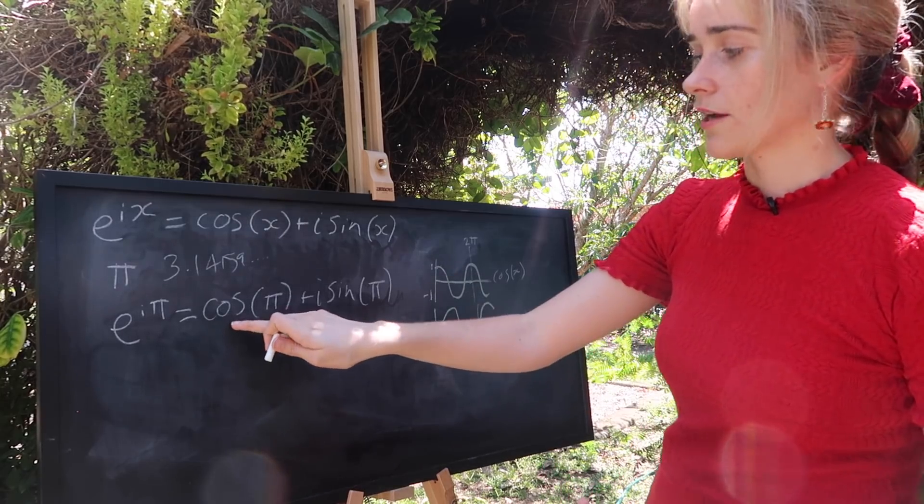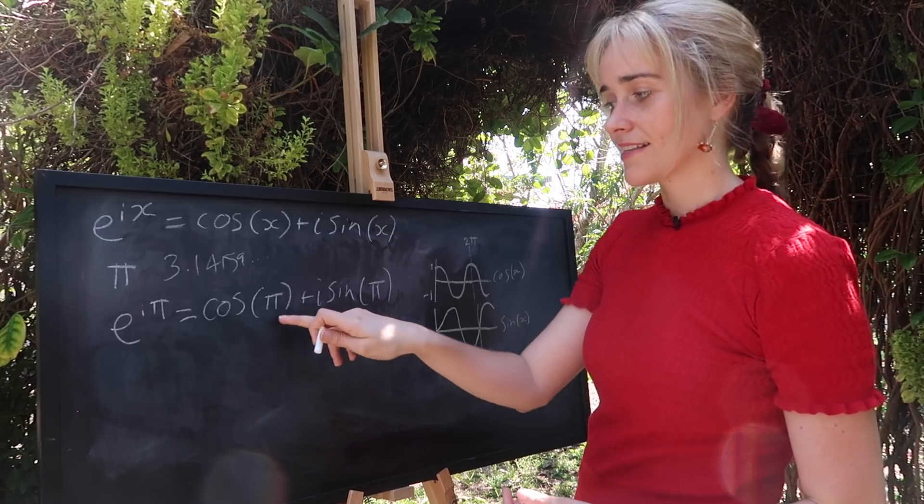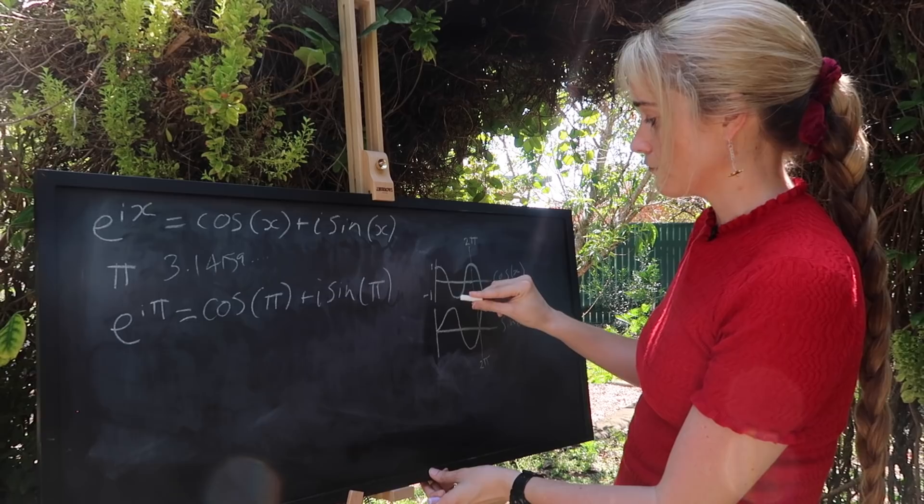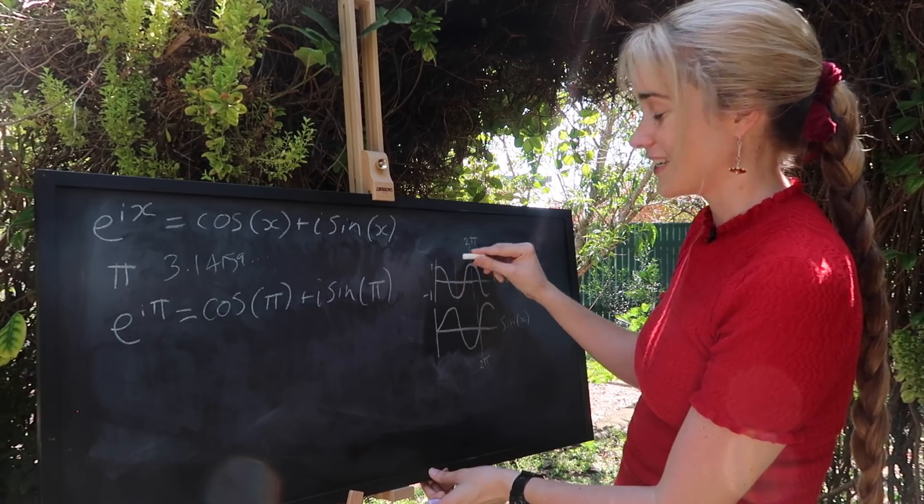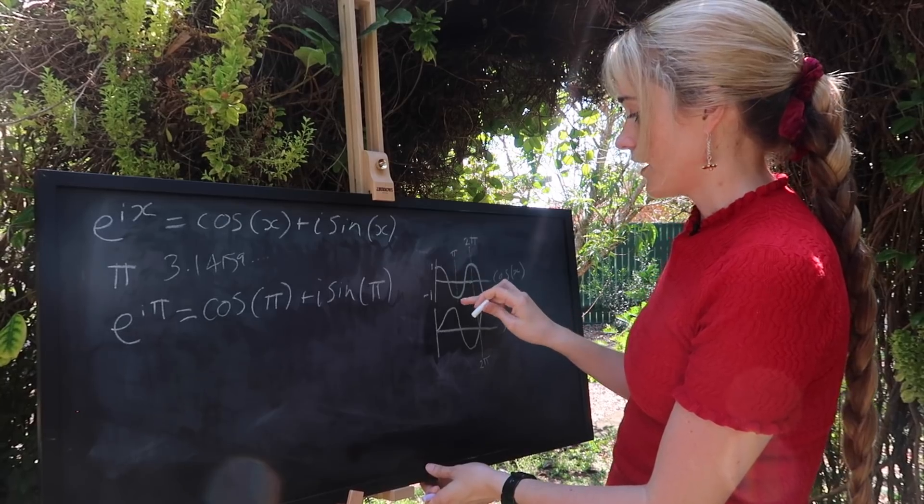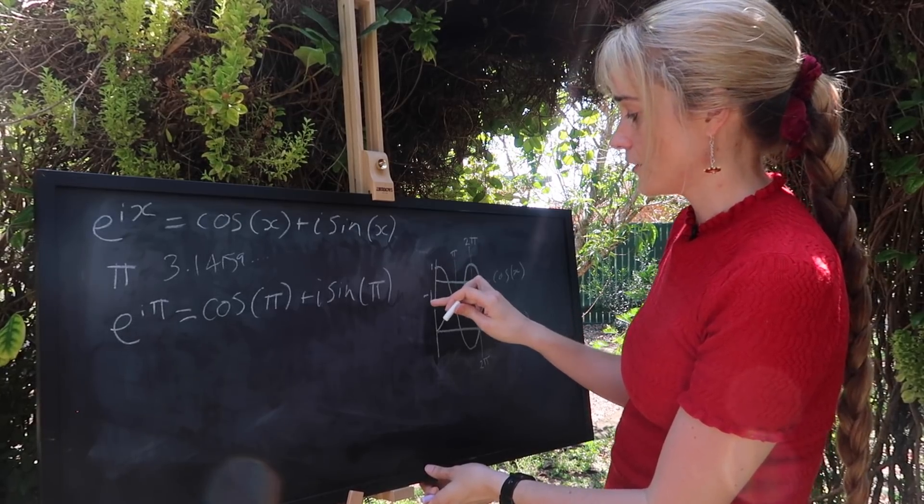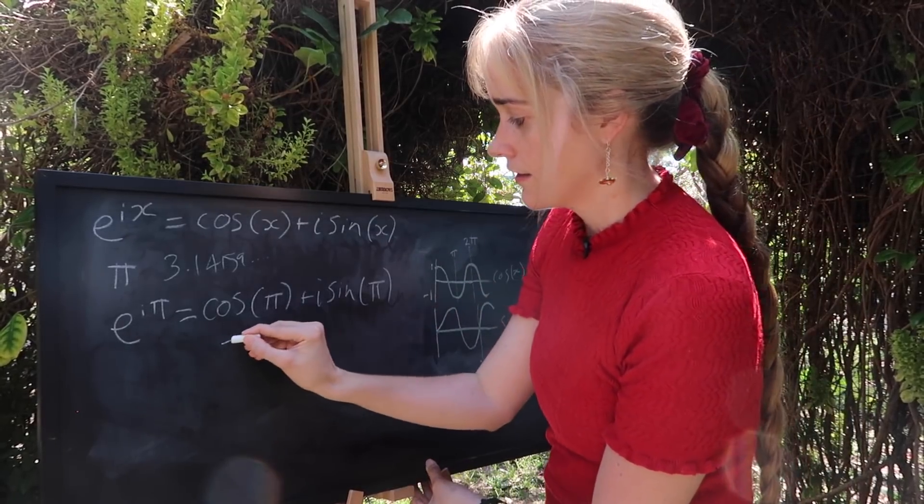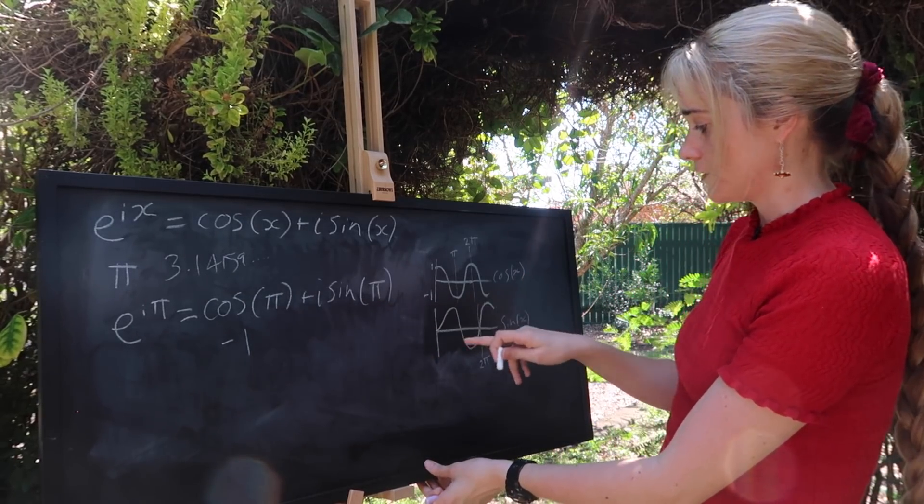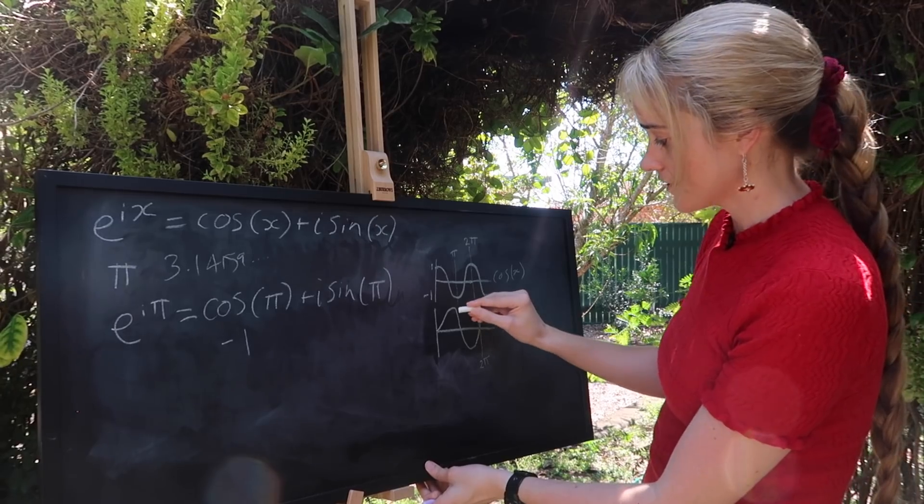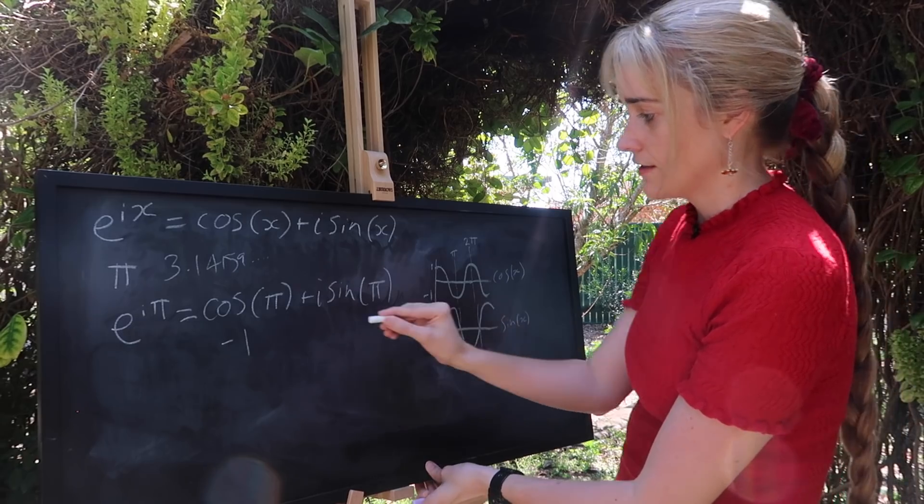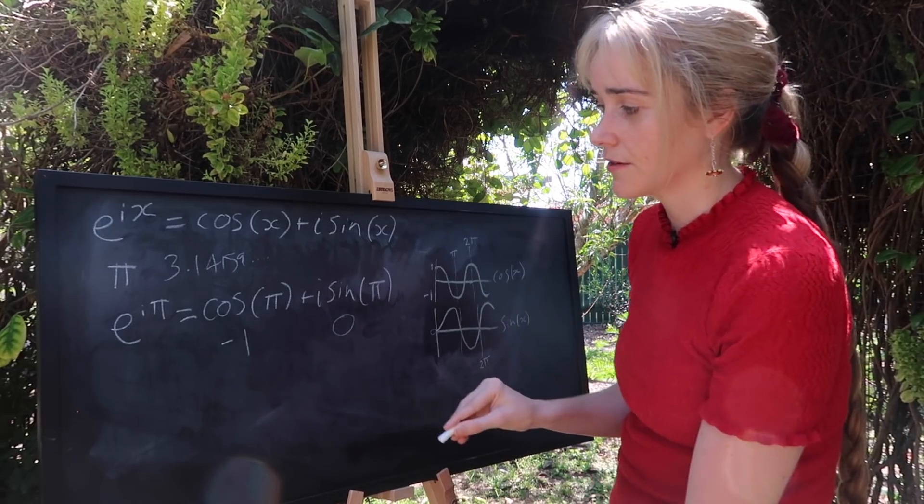So what is cosine at the value of one pi? That's half a rotation. Well half a rotation, he will be right down here at his minimum, at his lowest point unfortunately. That's going to be pi and it's going to be a value of minus one. Sine of pi, well where is he going to be at half a rotation? He's going to be back at the middle, back at zero. So this value is going to be zero.